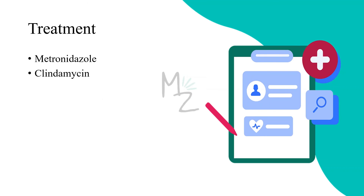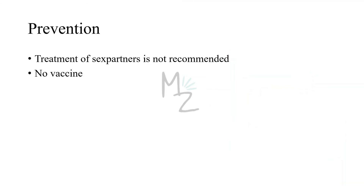Treatment: The drug of choice for bacterial vaginosis is metronidazole, but we can also use clindamycin. Prevention: Treatment of sexual partners is not recommended, and there is no vaccine available for bacterial vaginosis.